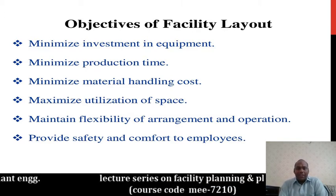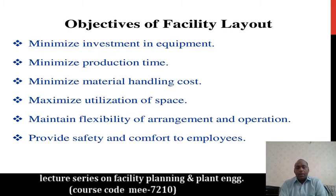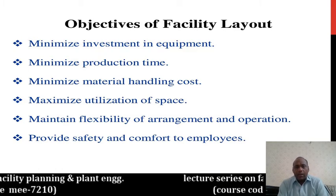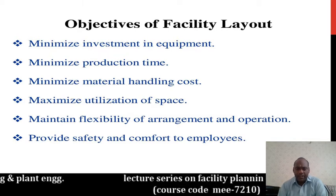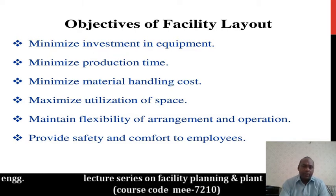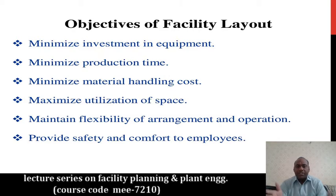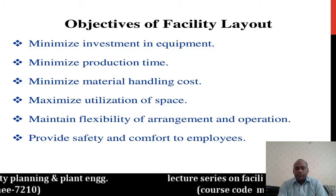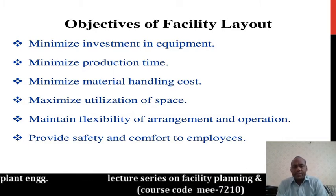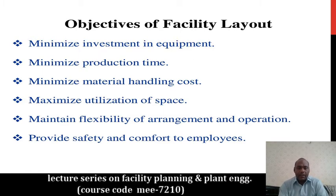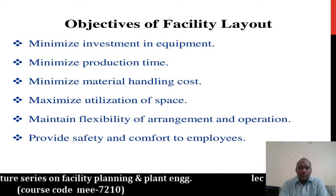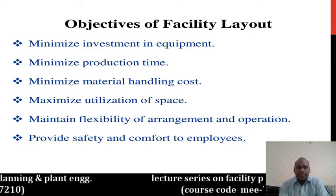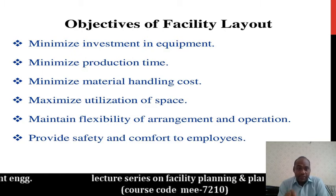Another objective is the utilization of space. In your industry, some space is available and some is not in your manufacturing area — machines, assembly lines, and quality check points are there. Utilization of space should be considered in your facility layouts as much as possible. This is most important.